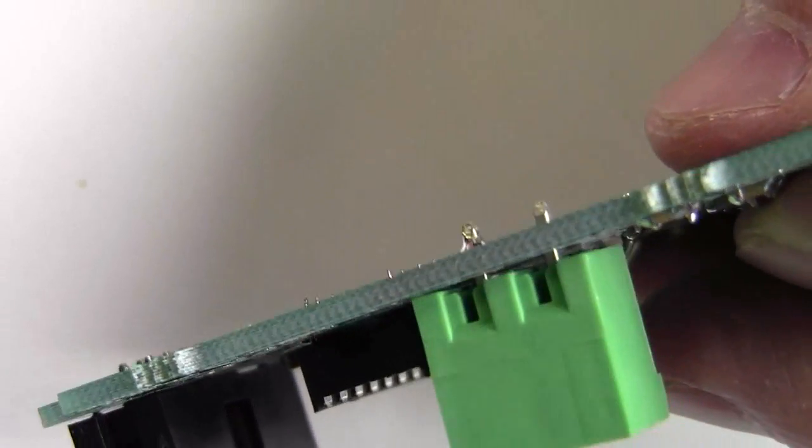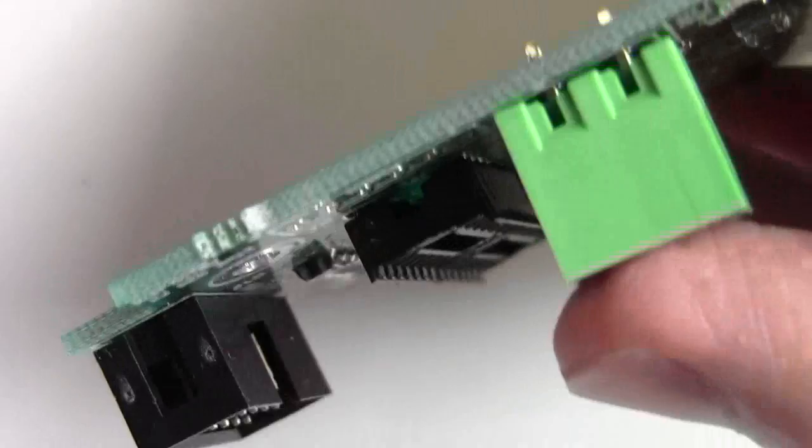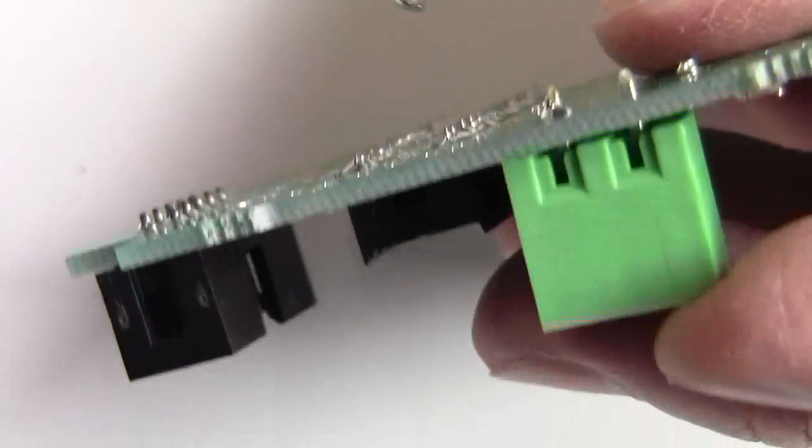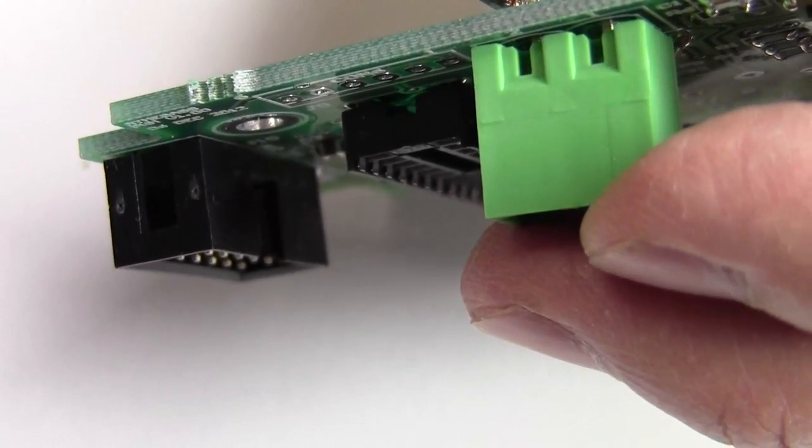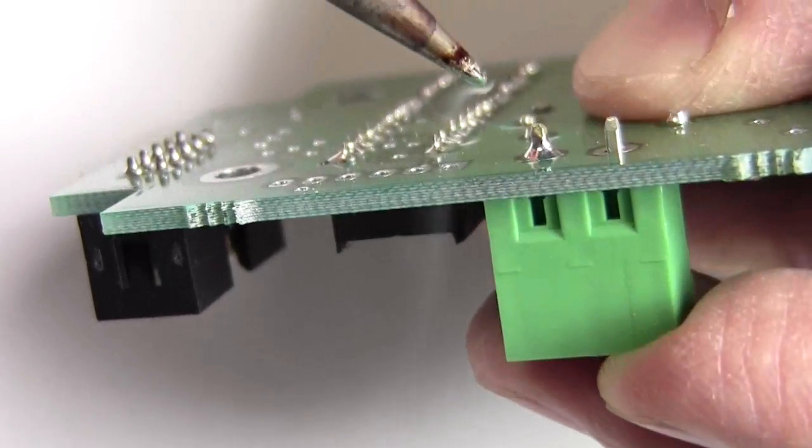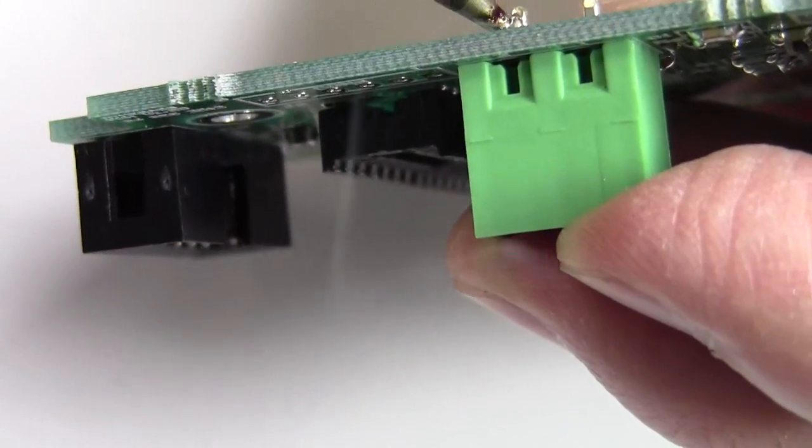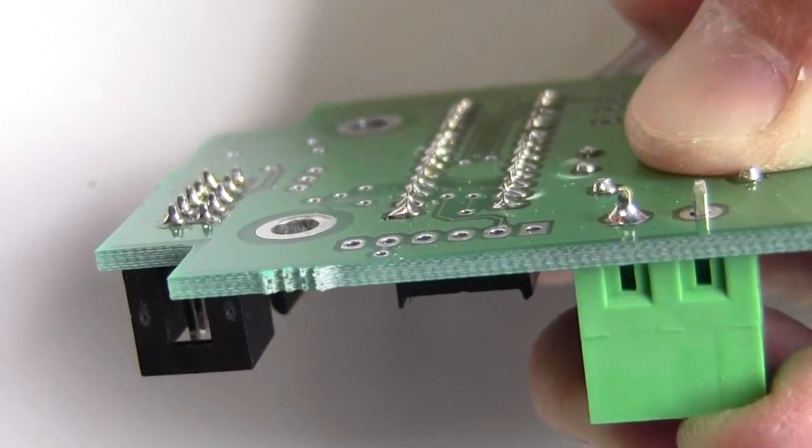Notice there's a bit of a gap there, so now reheat that single joint first. Then put it on there. We go.